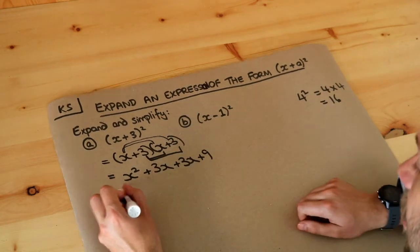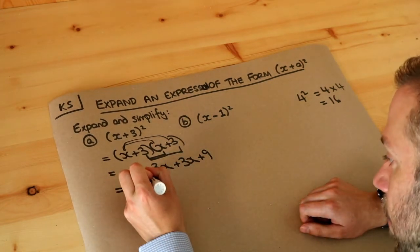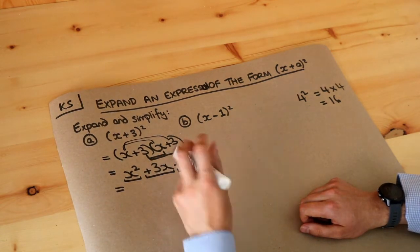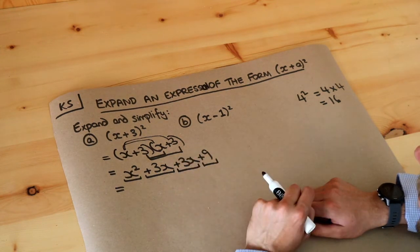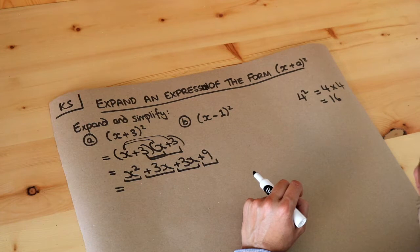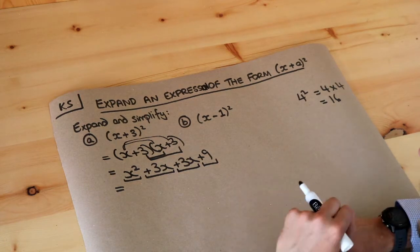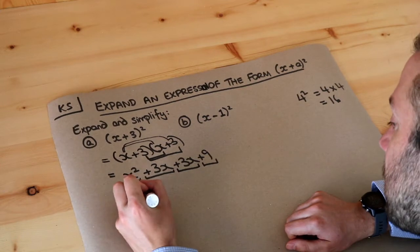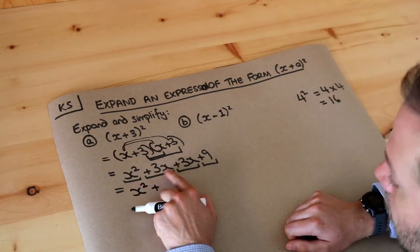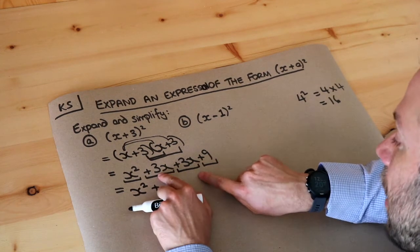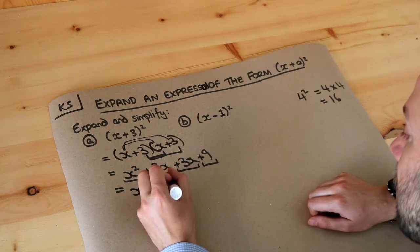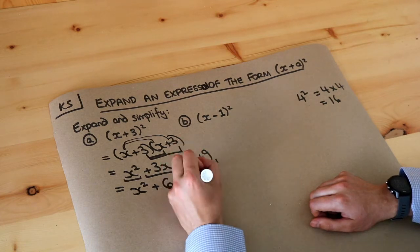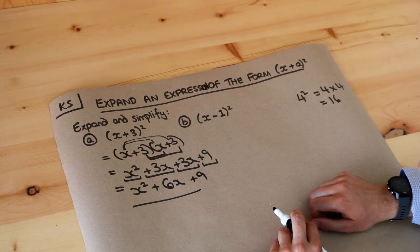Then we simplify by collecting like terms. I like to underline each term including the symbol in front — the plus or minus symbol should be grouped with the term just after it. Terms are like terms if they have the same variables and same powers. The x² term is on its own. We have 3x plus 3x, which is 6x. Then the constant term, plus 9, stays as is. So the final answer is x² + 6x + 9.